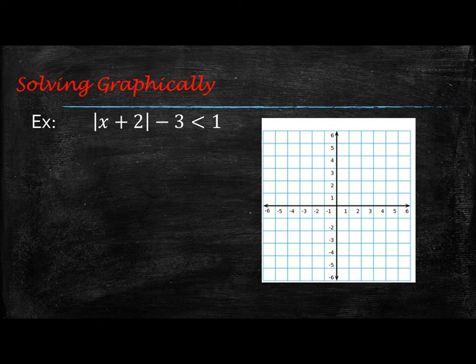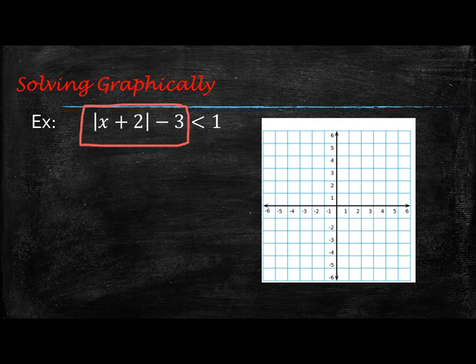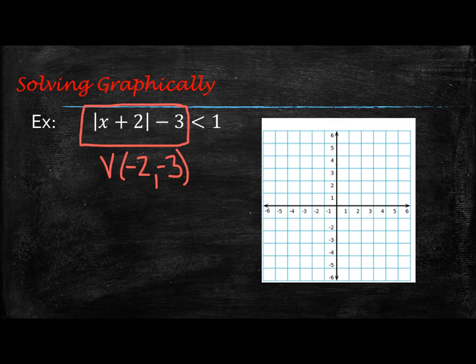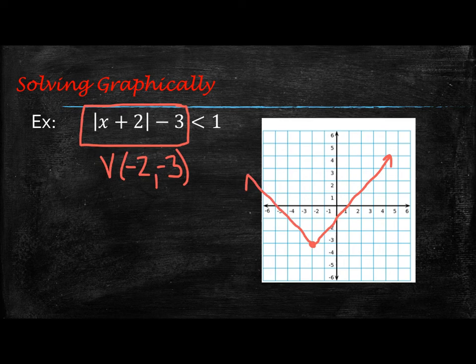Now let's look at the other example. We're asking when is the absolute value of x plus 2 minus 3 less than 1. We're going to take the left side and graph it. This has a vertex of (negative 2, negative 3), with a slope of 1 on the right side and negative 1 on the left side, so we extend it like this.